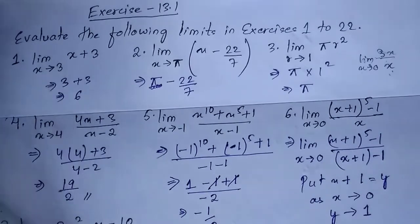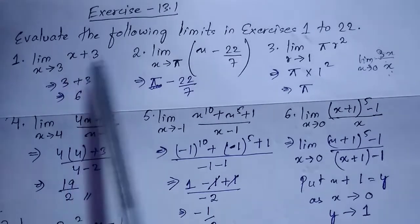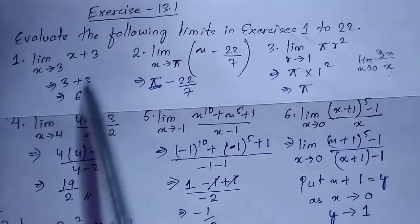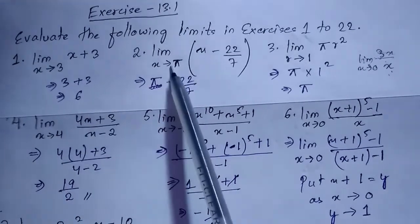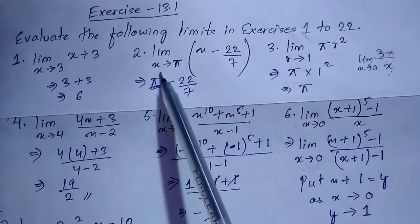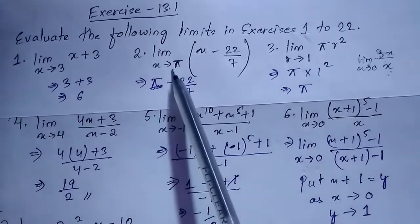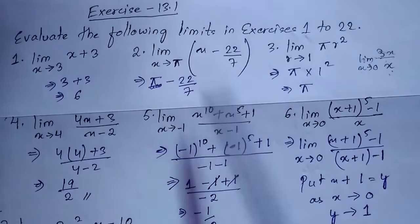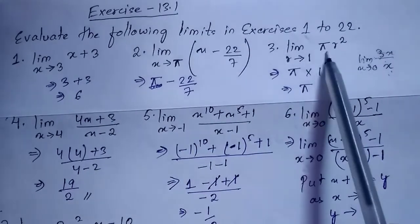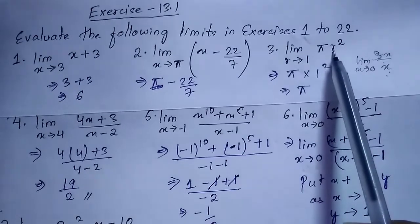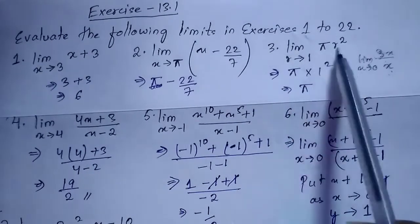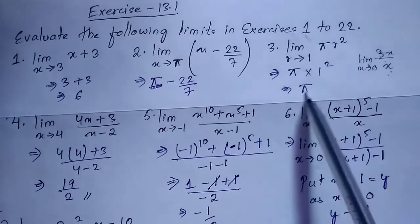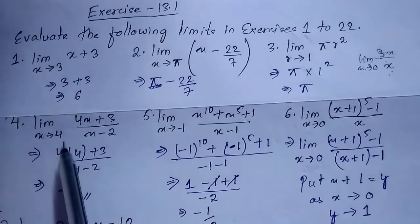Question 1: lim x→3 of (x + 3). You just put the value 3, so it's 3 + 3 = 6. Question 2: lim x→π — put x = π, so the answer is π − 22/7. Question 3: lim r→1 of πr² — put r = 1, so it's π × 1² = π.